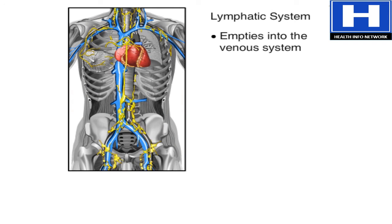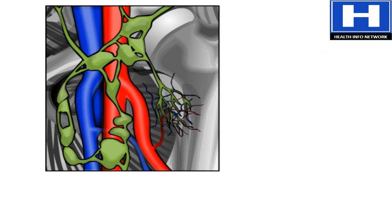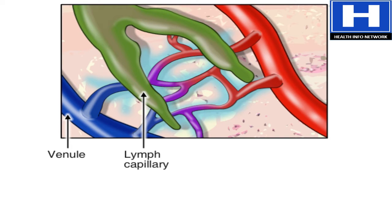The lymphatic system runs parallel to the veins and empties into them. Lymph forms at the microscopic level. Small arteries or arterioles lead to capillaries, which in turn lead to small veins or venules. Lymph capillaries lie close to the blood capillaries, but they are not actually connected.